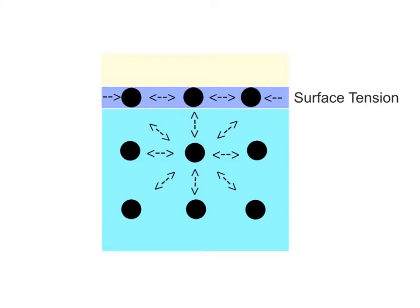Water's cohesion also creates a very high surface tension, which is water's excellent ability to stick together at a liquid surface, the boundary where water meets the air.